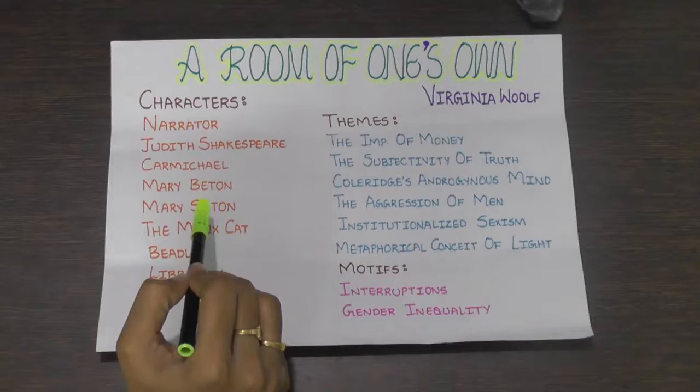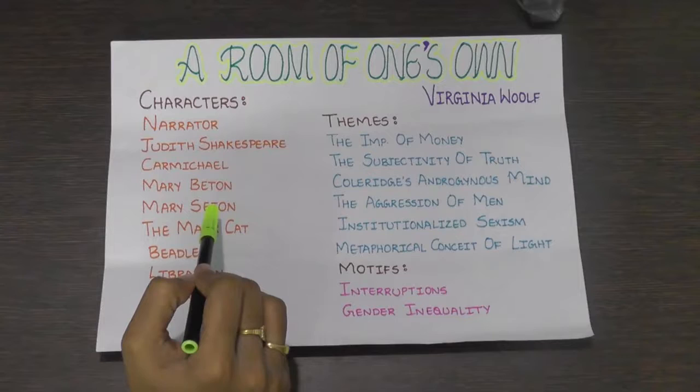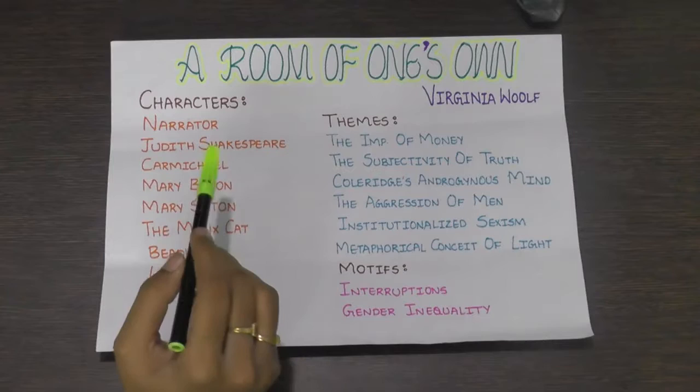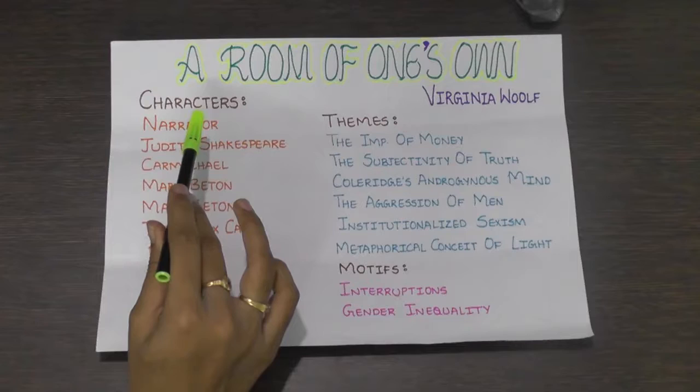Mary Seton is a friend of the narrator at the women's college Fernham. Mary Seton's mother had 13 children. She and the narrator discuss the history of women and money.